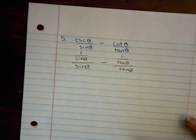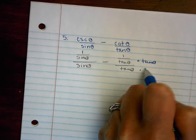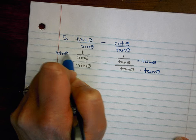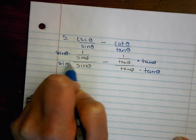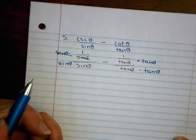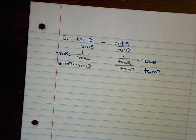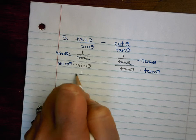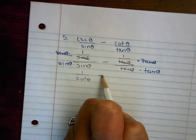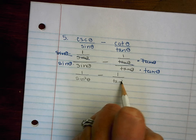From there I have my fractions, so I'm going to multiply the top and the bottom by tangent of theta to simplify the complex fraction. Over here I do the same thing. When I do that, these are going to cancel because sine divided by sine is 1, and these will cancel because tangent divided by tangent is 1. So I'm left with 1 in the numerator and sine squared in the denominator, and then 1 in the numerator and tangent squared in the denominator.